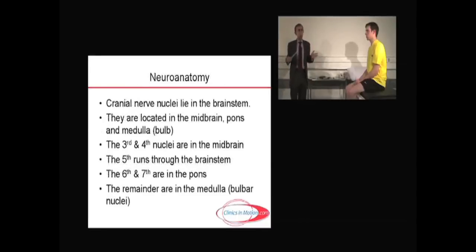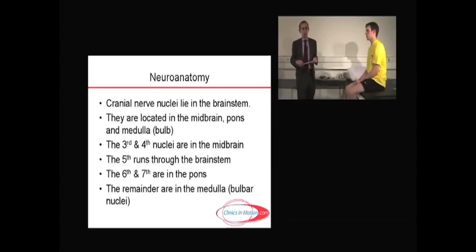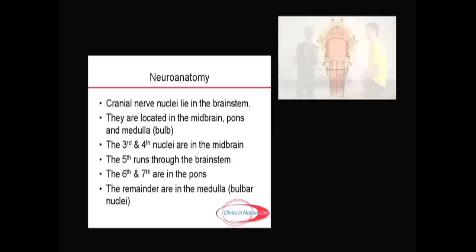The way to understand them goes back to what was said earlier: the cranial nerve nuclei lie in the brainstem — the midbrain at the top, the pons in the middle, and the medulla. So the midbrain, the middle of the brain, is joined by a bridge — pons, pontus in Latin — to the medulla, which is the bulb, where the bulbar nuclei are.